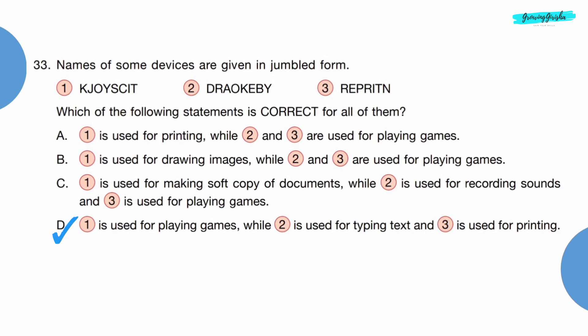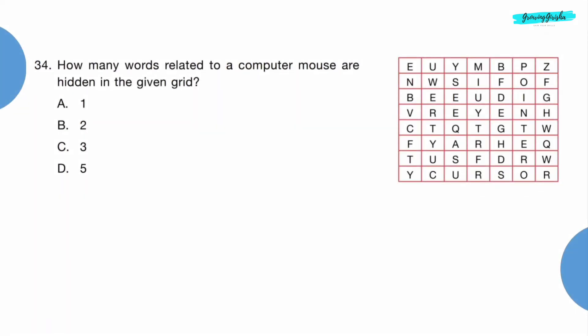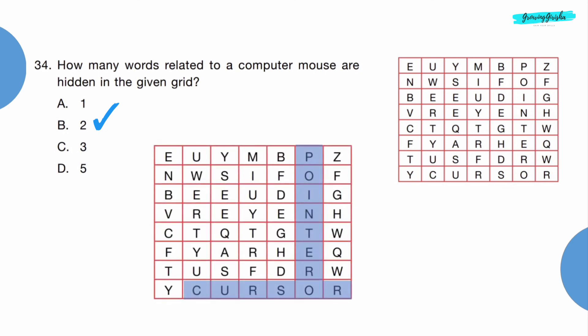Question 34: How many words related to a computer mouse are hidden in the given grid? Option B. The two words are cursor and pointer.